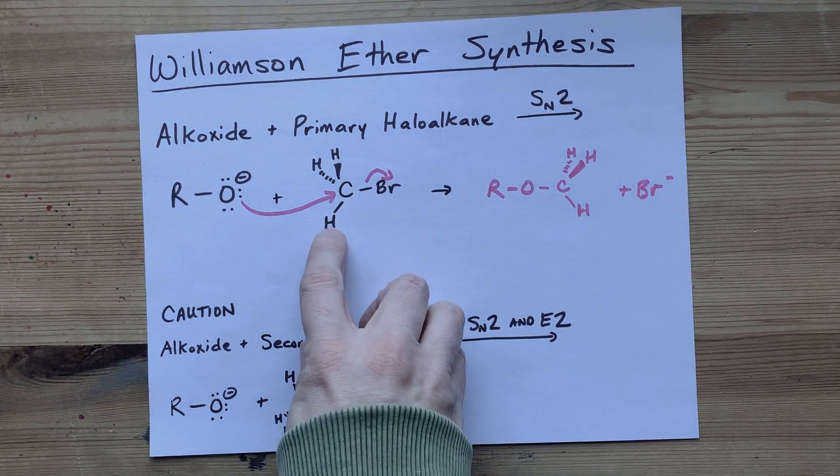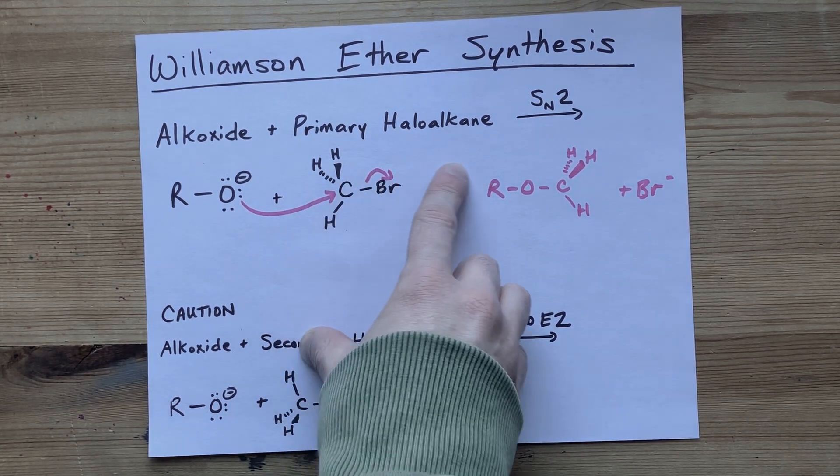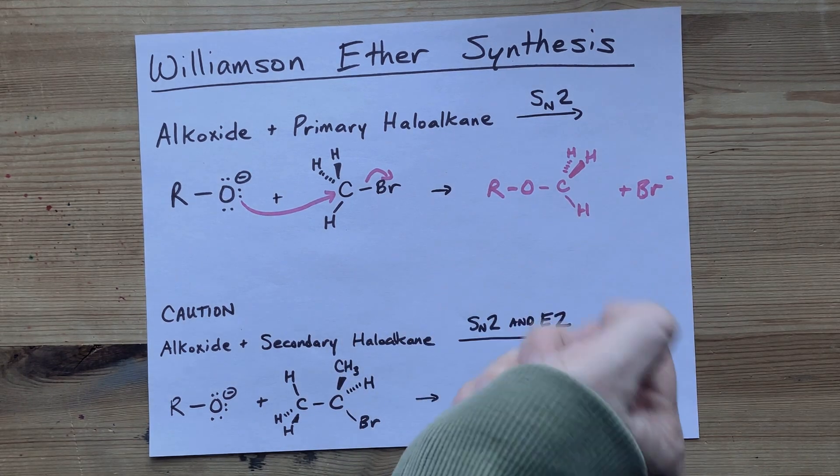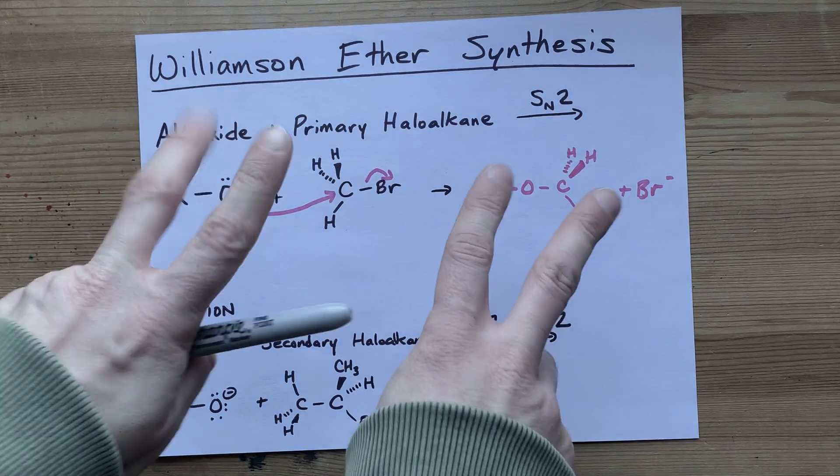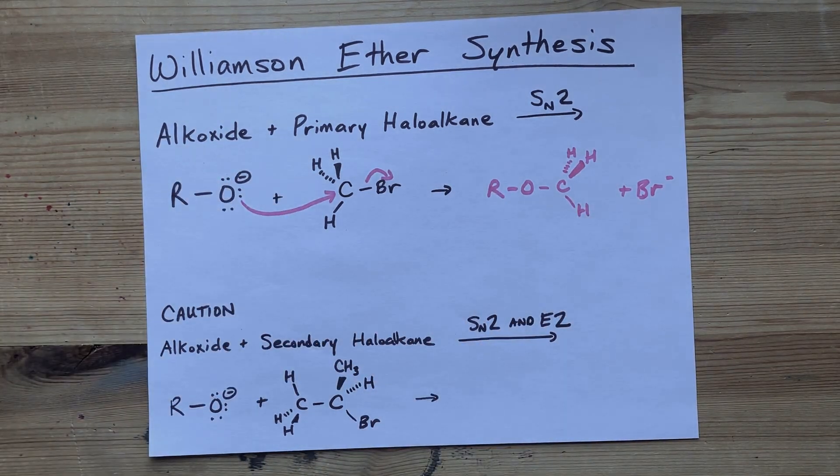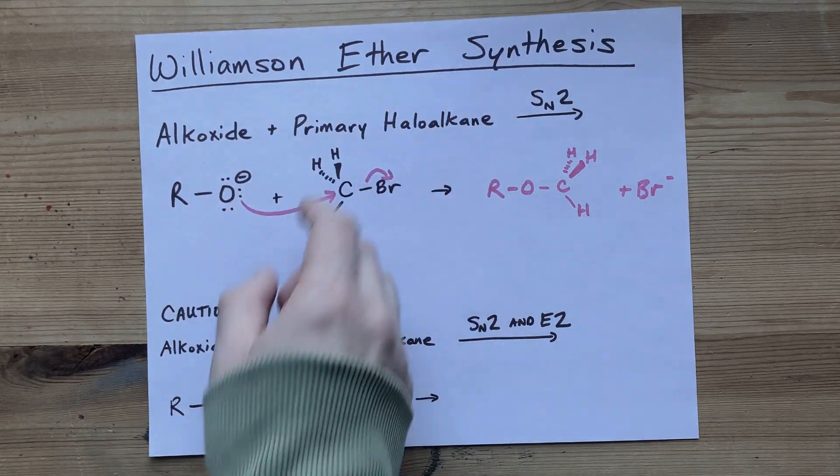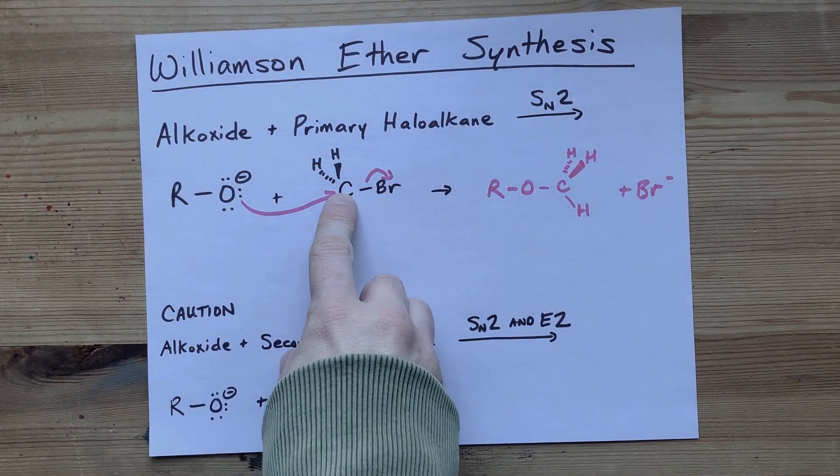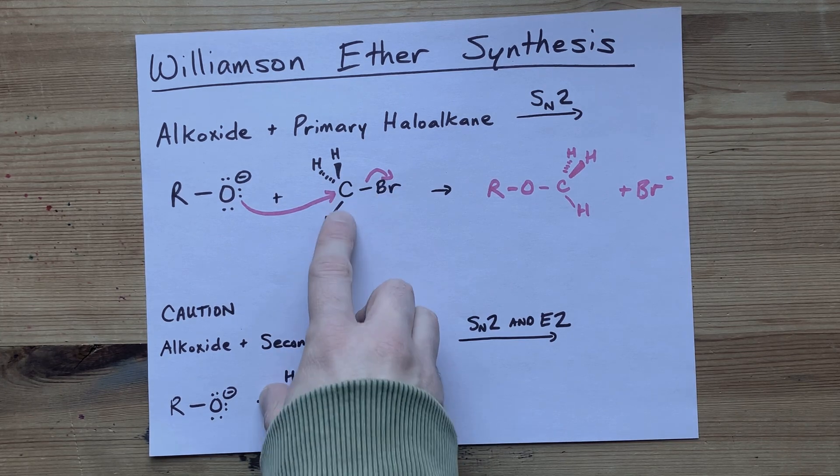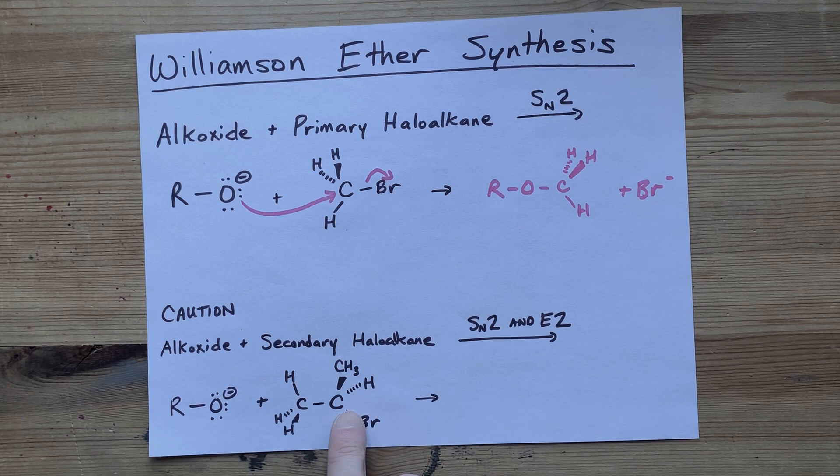Perhaps if I had have made these different things, this could have been like R. And then after the reaction perhaps it becomes S, depending on what else is connected to it. The point is that the stereochemistry has inverted. Now again, I want to emphasize the Williamson ether synthesis is only for primary haloalkanes, where the carbon that has the bromine on it has at most one other carbon connected to it.